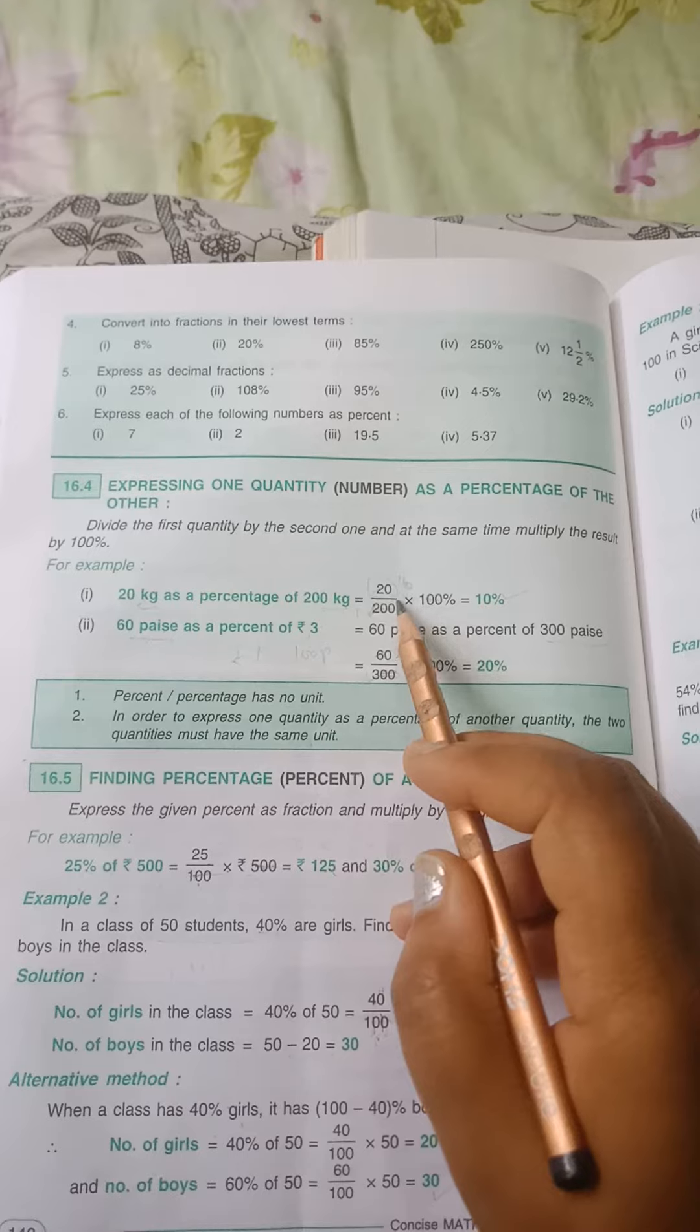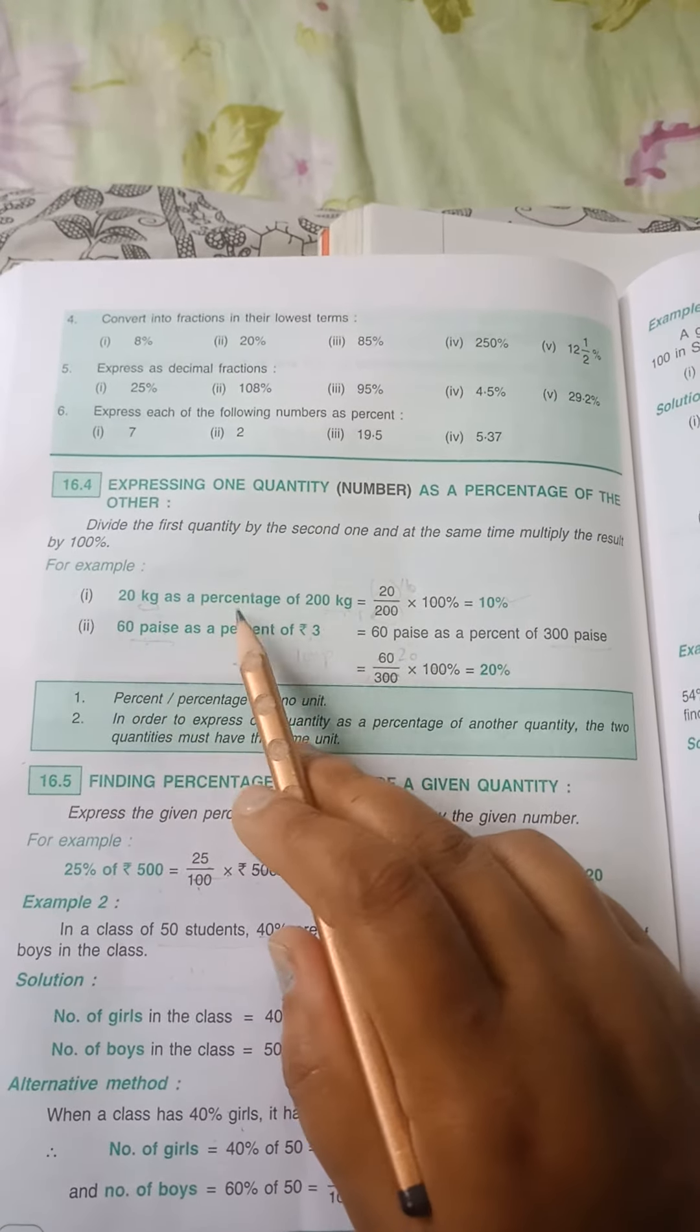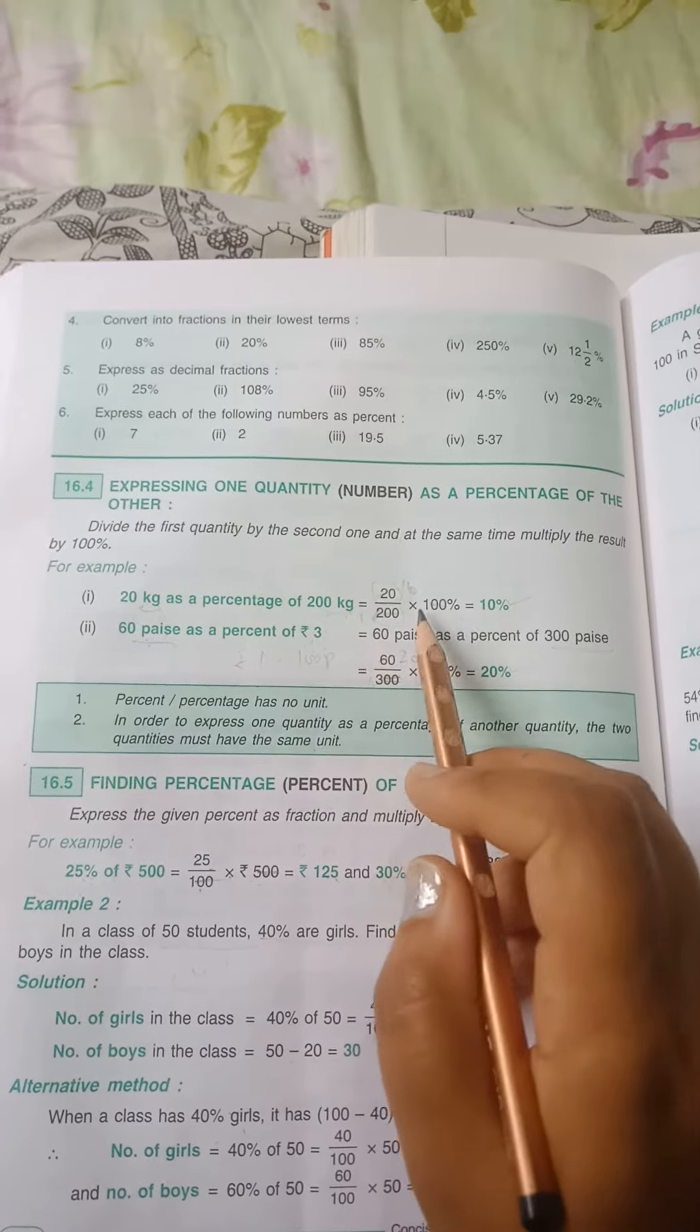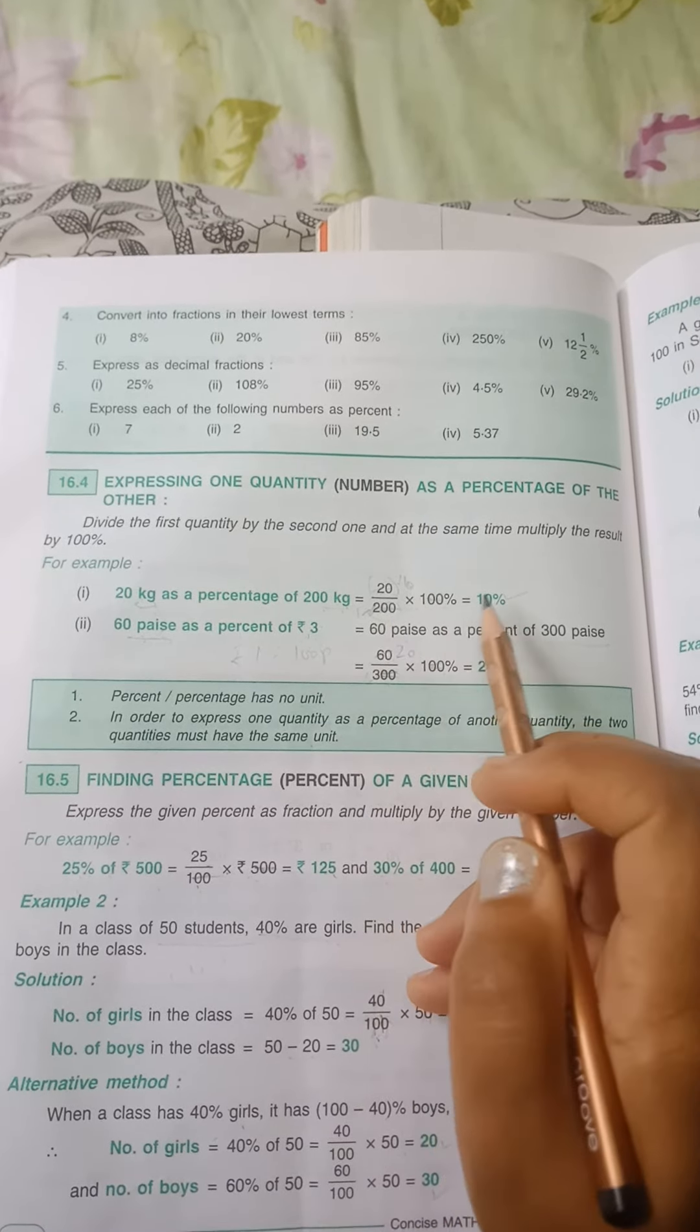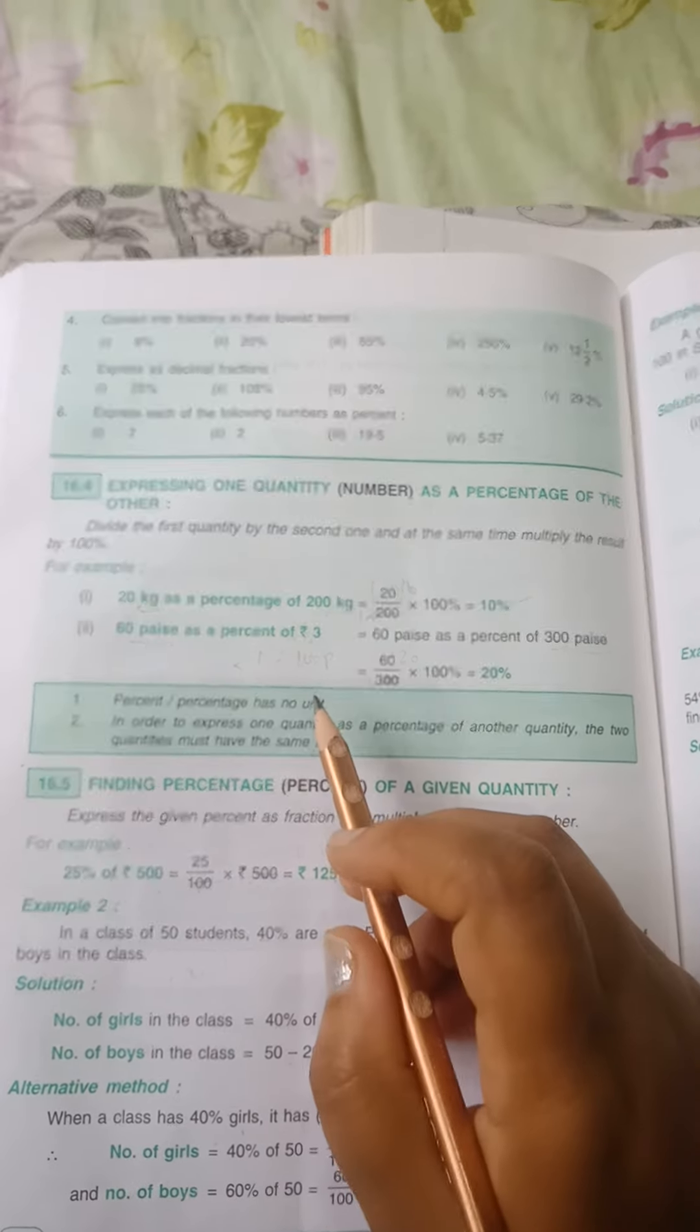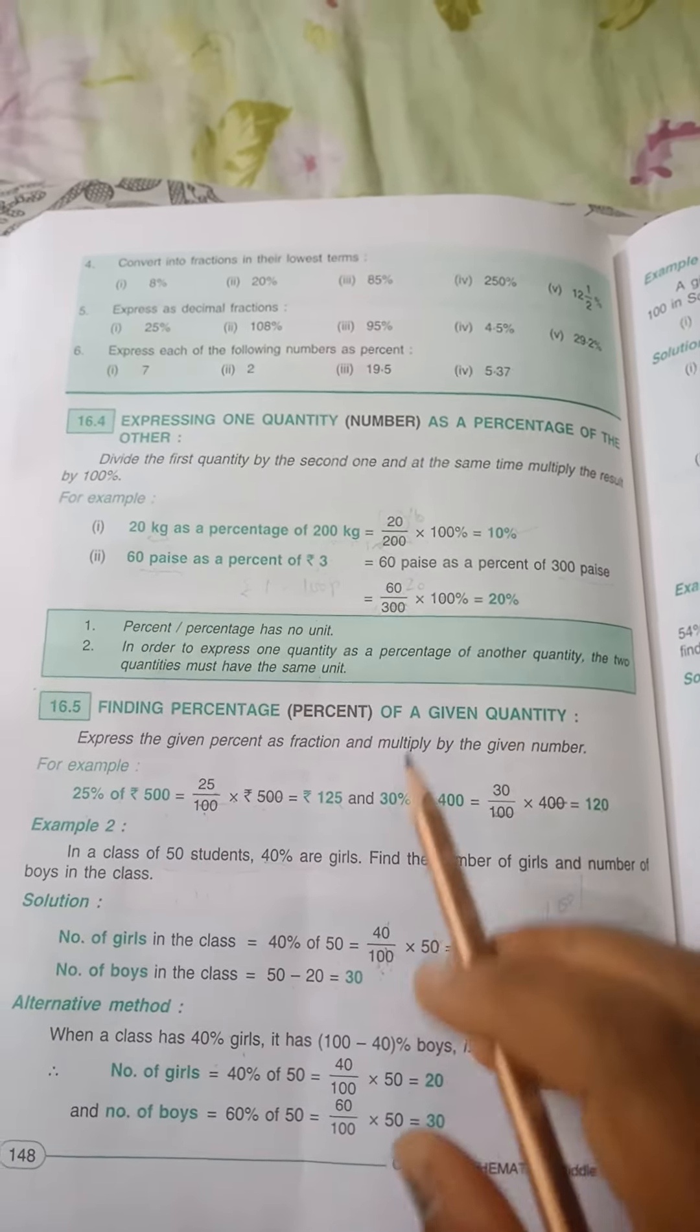So 20 upon 200. First example I am doing, multiply by 100 percent. First quantity divided by the second quantity times 100 percent. Zero cancel zero, not 2. Tens are 20, so the answer is 10 percent.